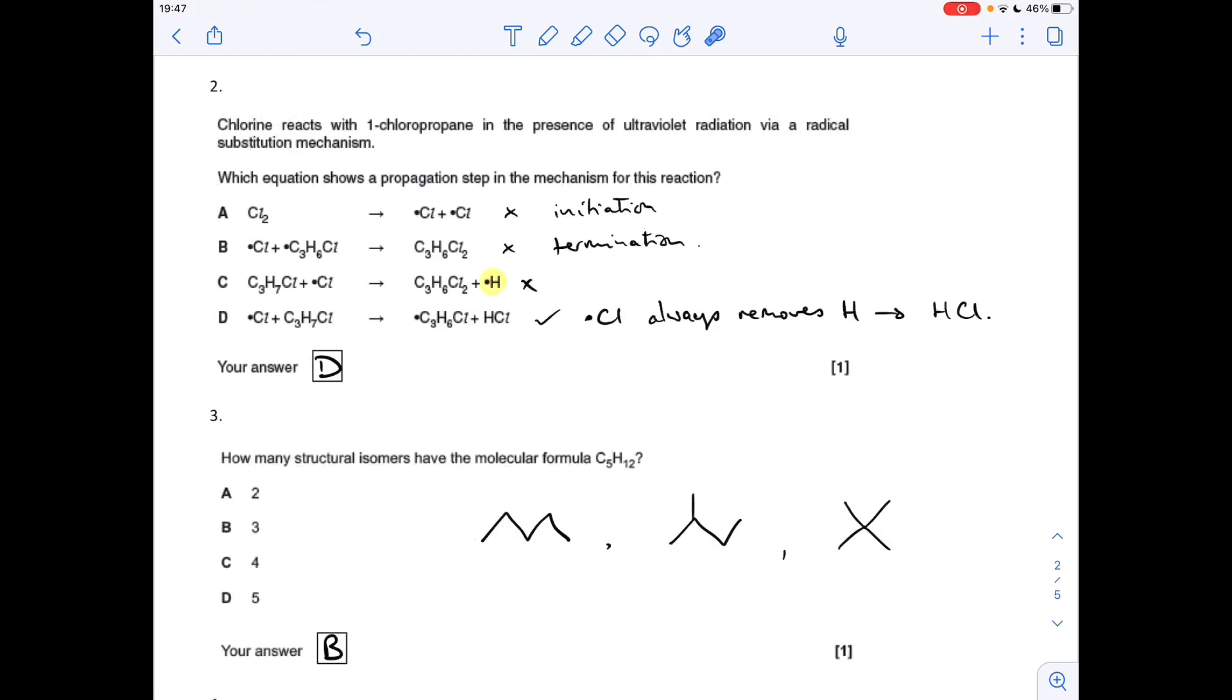A couple of multiple choice questions now. Which equation shows a propagation step in the mechanism for this particular reaction? A is not right because that's an initiation reaction. B is not right because that's a termination reaction. C looks like it could be right because it does look like a propagation reaction, but when chlorine radicals react with things like that, they will always take a hydrogen and make an HCl molecule, so that's why D is the right answer. Chlorine radicals always remove H to make HCl.